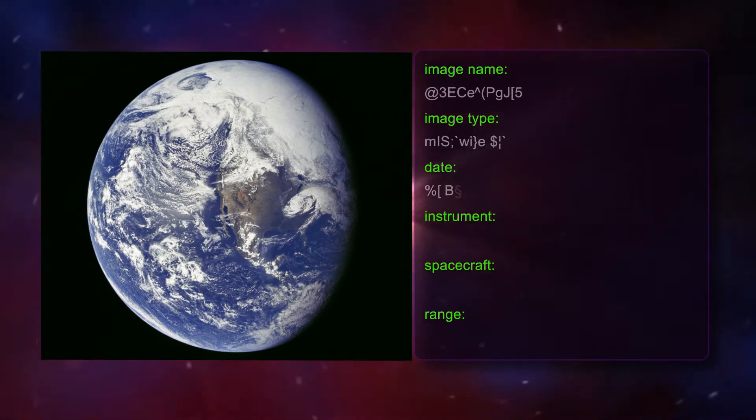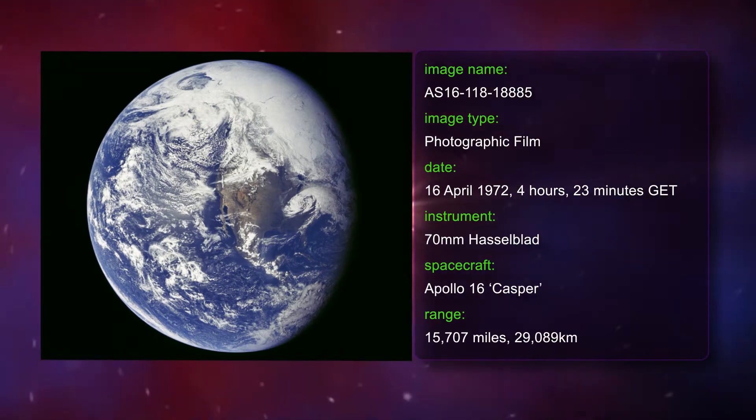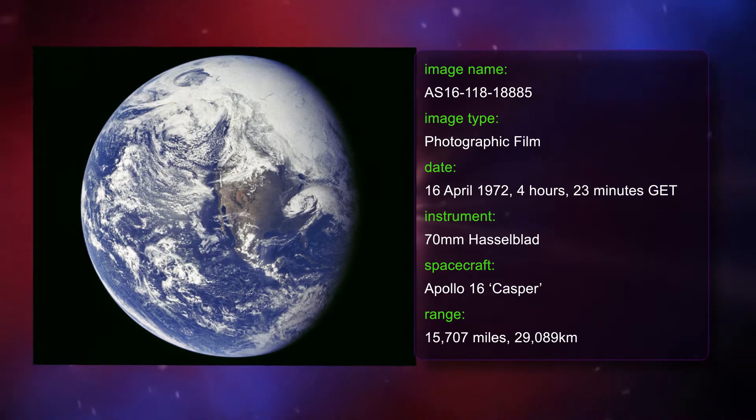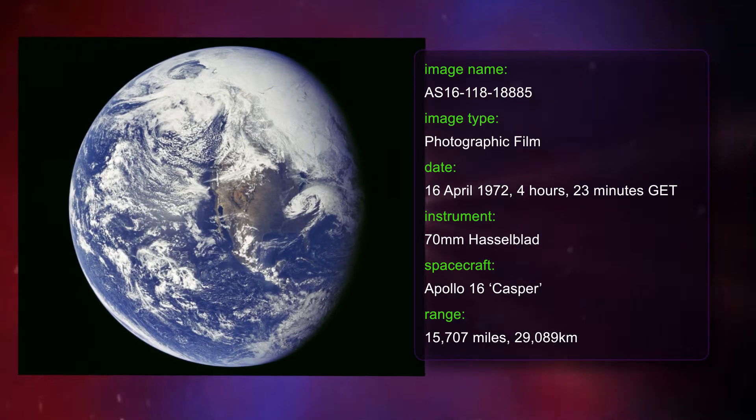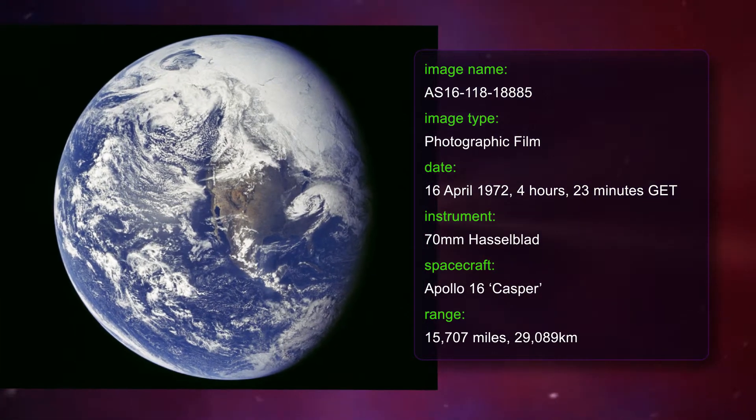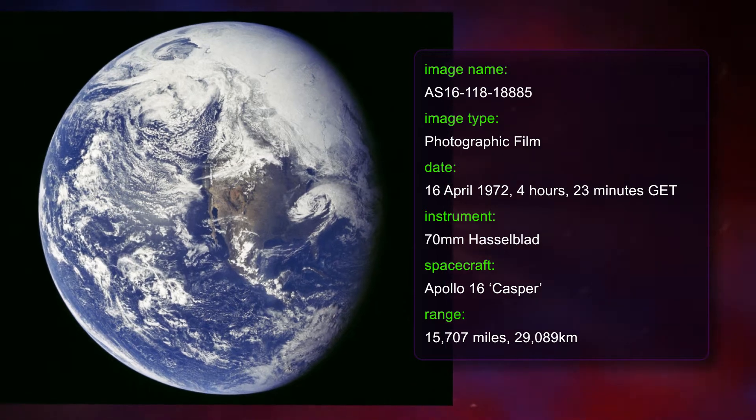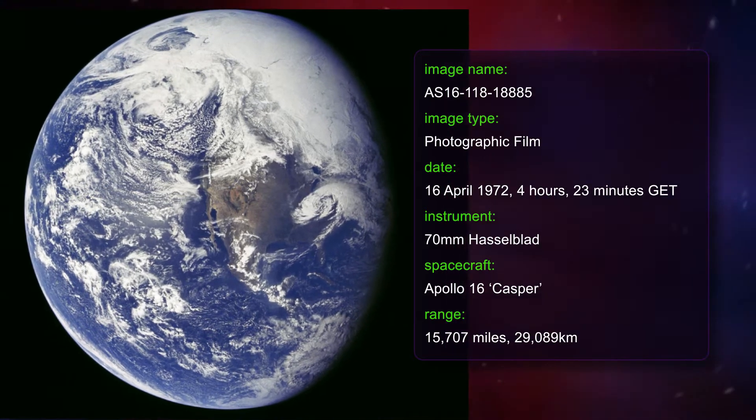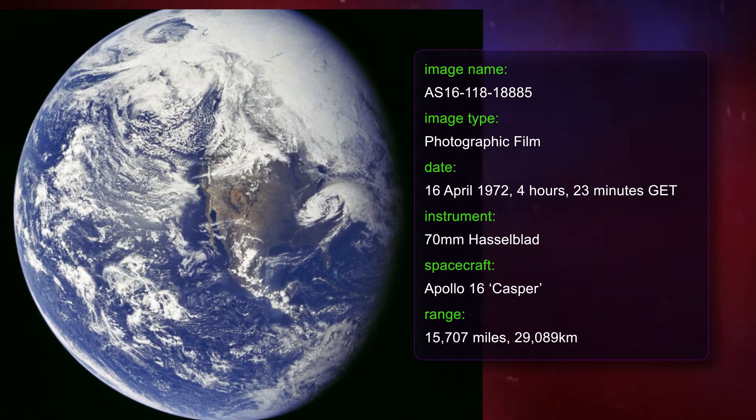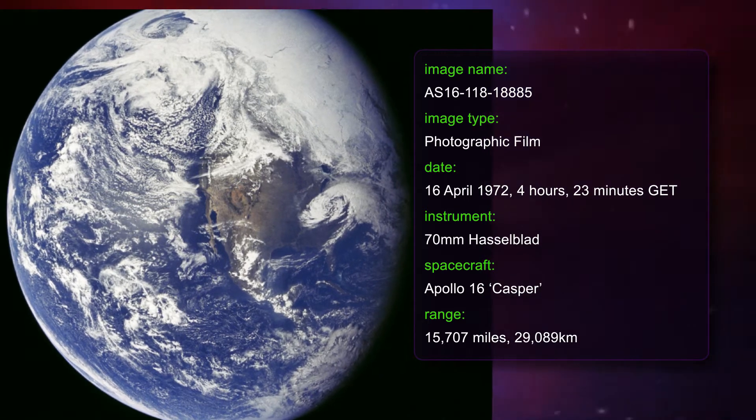In our lineup this image is actually incorrectly labeled. It wasn't taken in 1975 but on the 16th of April 1972 by John Young, the commander of Apollo 16, when Apollo 16 was 15,700 miles from Earth. The camera was a handheld 70mm Hasselblad.